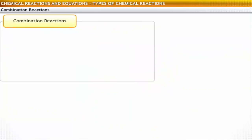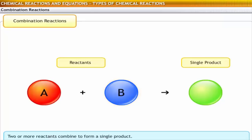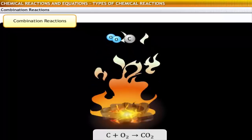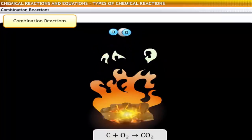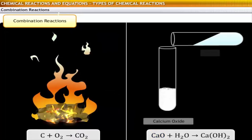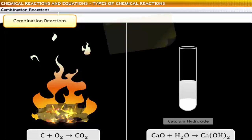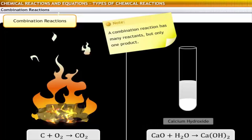Let us begin with combination reactions. A combination reaction is one in which two or more reactants combine to form a single product. The reactants may be elements or compounds. The general form of the reaction is: A combines with B to form a single substance C. For example, coal burns in oxygen to form carbon dioxide — two elements, carbon and oxygen, combine to form a single product. Another example is calcium oxide reacting with water to form slaked lime or calcium hydroxide. You must remember that a combination reaction has many reactants but only one product.